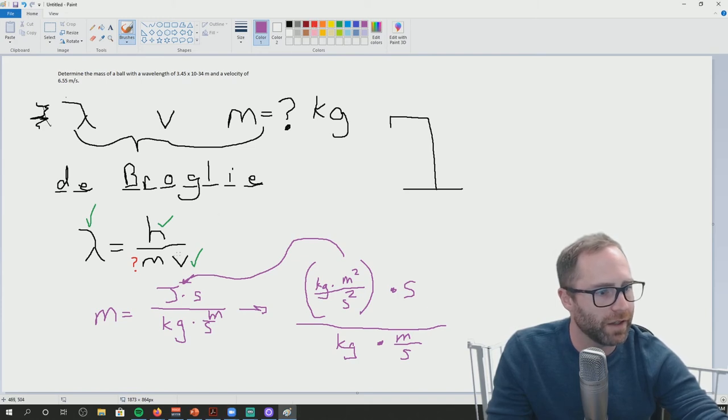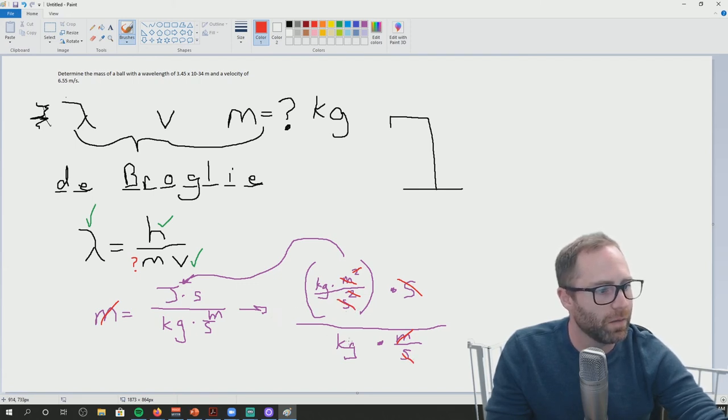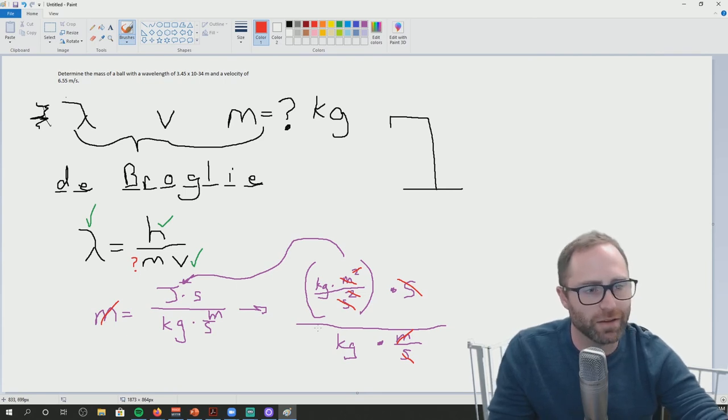And so then your units end up canceling out because you're going to have the meters. Oops. You're going to have the meters and that's going to cancel out with this one over here. And then, well, and this one's going to cancel one of those. And this one's going to cancel one of those. So like all of your meters cancel out. This is going to cancel with one of these. And then what's going to be left over is your kilograms after you do the rearrangement. Like it won't actually cancel out. Those kilograms won't truly cancel out after the rearrangement.